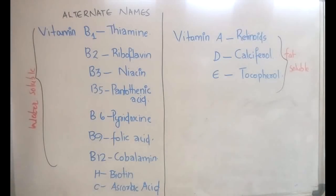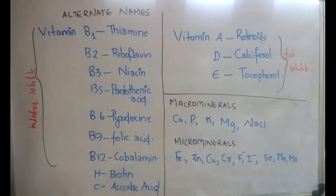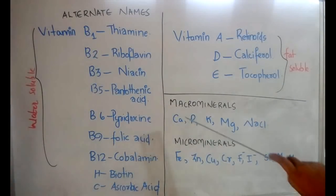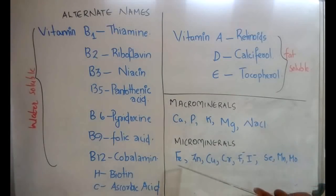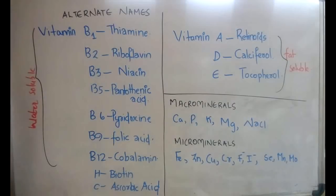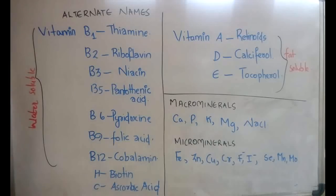Now let's go to the names of the macro minerals and micro minerals. The macro minerals we need are calcium, phosphorus, potassium, magnesium, sodium, and chloride. The micro minerals required are iron, zinc, copper, chromium, fluoride, iodide, selenium, manganese, and molybdenum. Questions from the macro mineral part can come in any exam. For students preparing for NEET, biochemistry is extremely important, so write these down for reference.